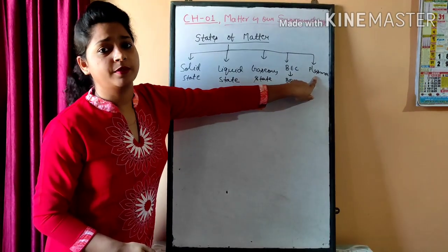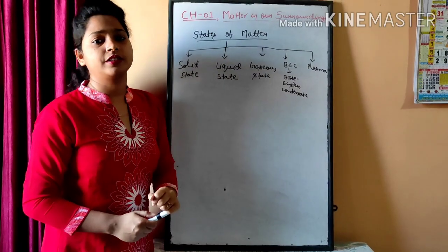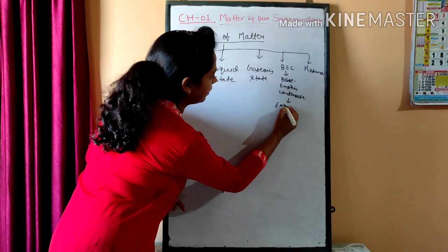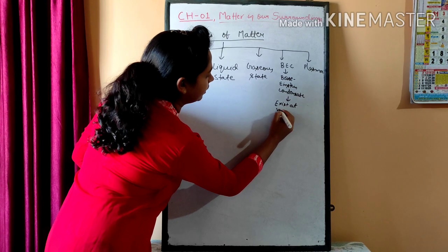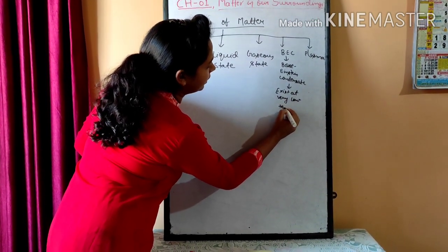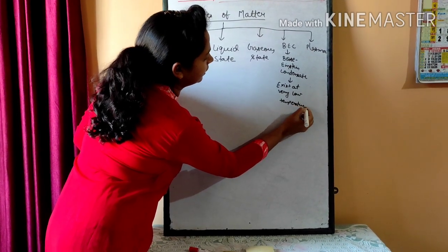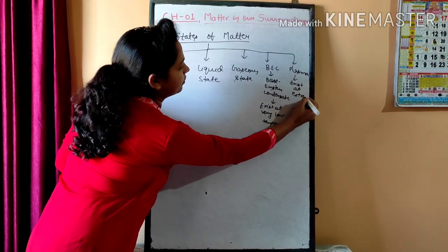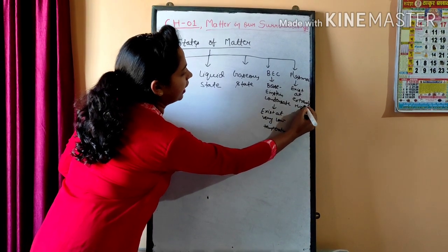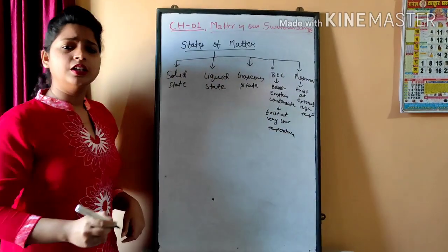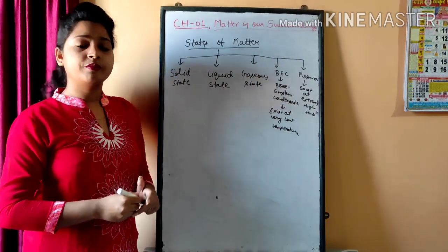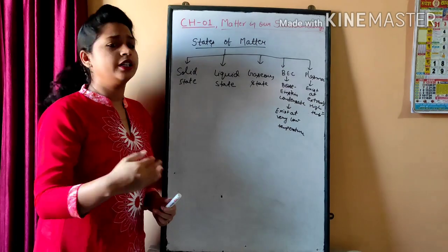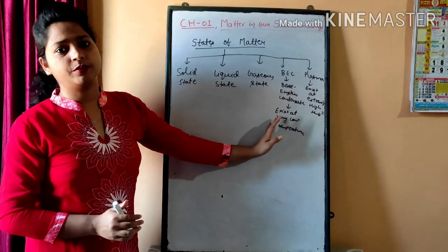The last one is plasma. Plasma exists at extremely high temperature, like hot springs and similar environments. So these two states of matter are not commonly encountered. In your NCERT book or for your examination in standard 9, these two are not very important.